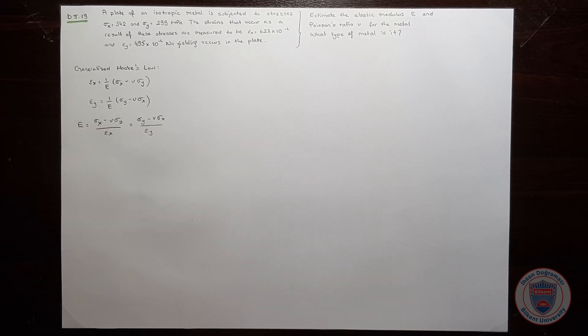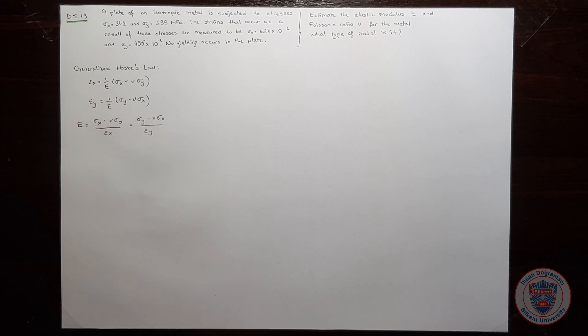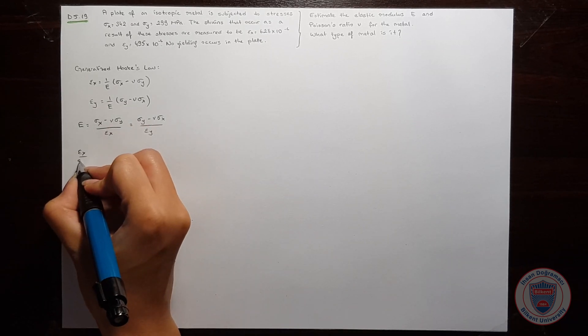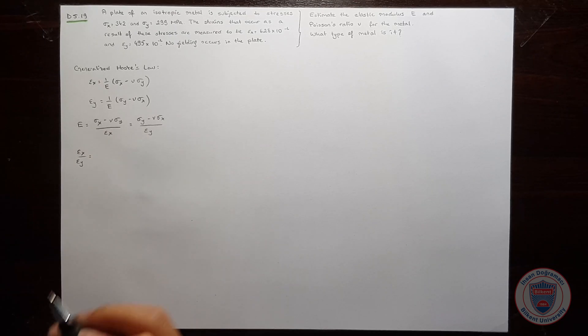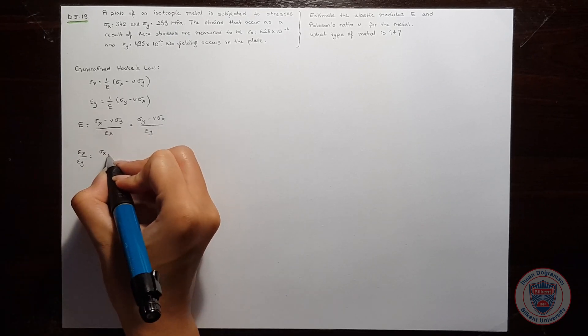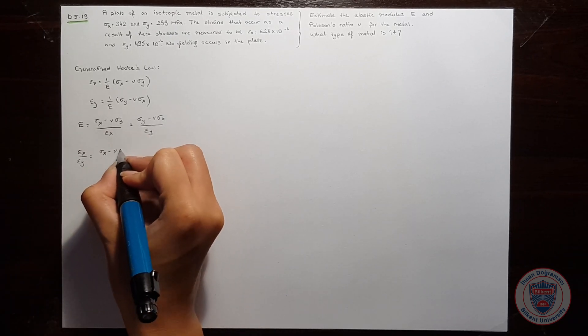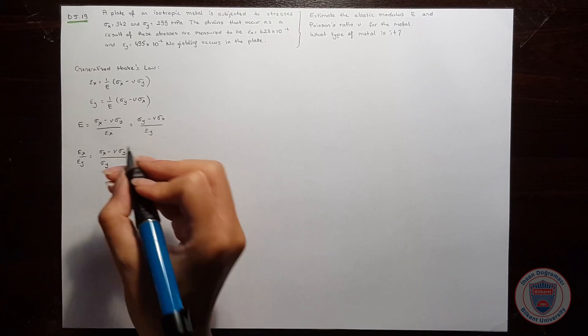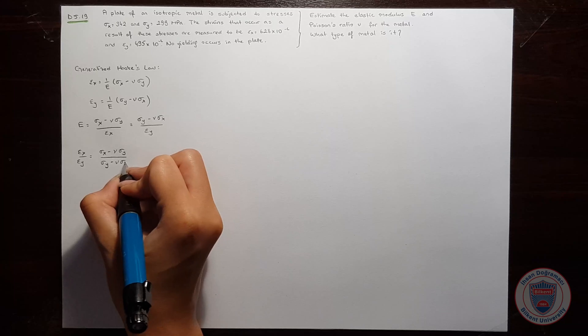But we don't know the value of Poisson's ratio yet, so let's find the value of Poisson's ratio first. We know that εx over εy is equal to σx minus Poisson's ratio times σy, divided by σy minus Poisson's ratio times σx.